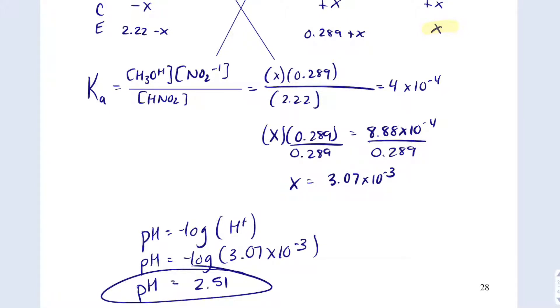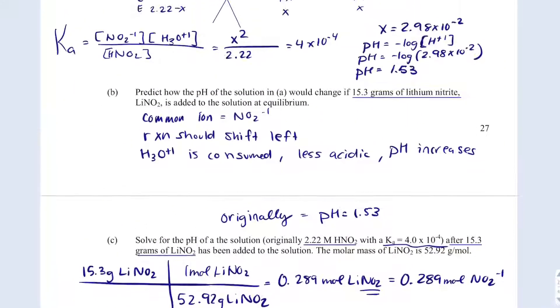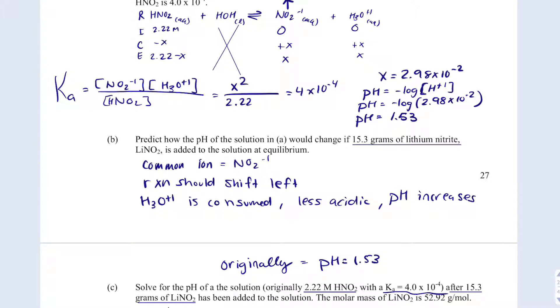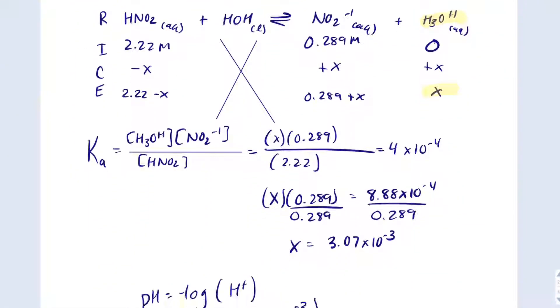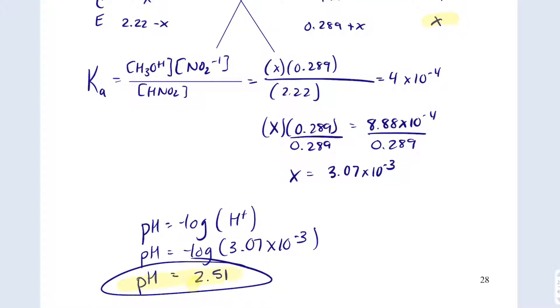Let's see. Did the pH actually increase when I added a common ion here? The pH was 1.53. We expected the pH to increase. We did some math and we proved that it did in fact increase.